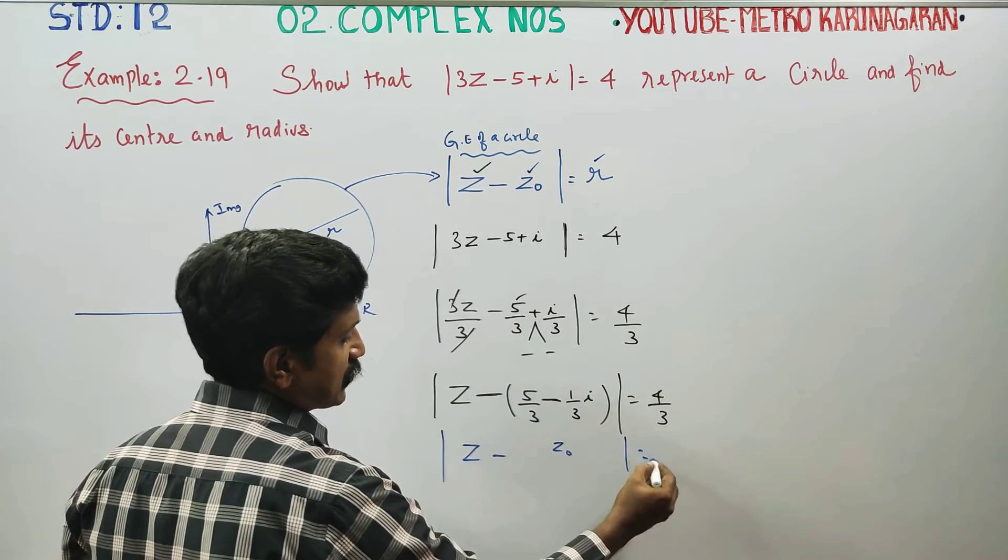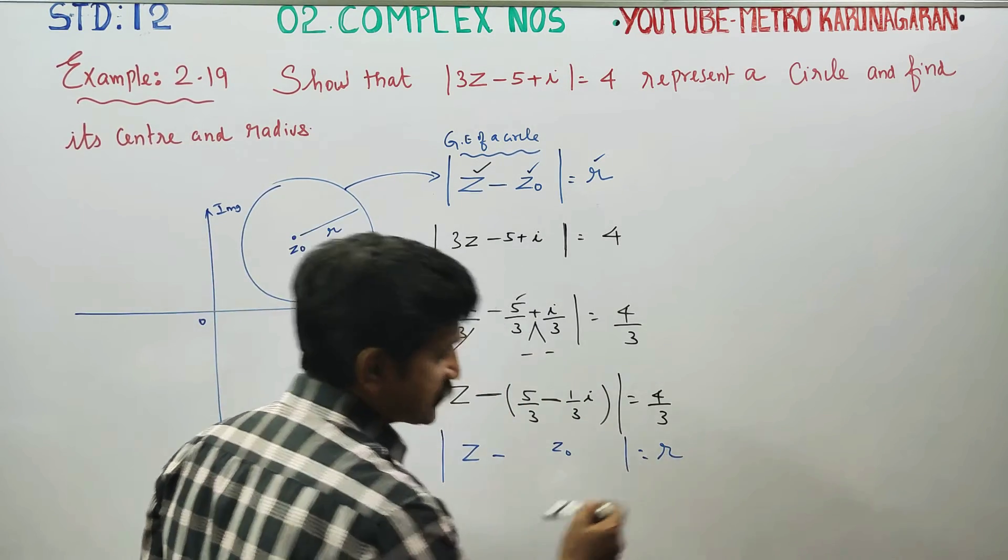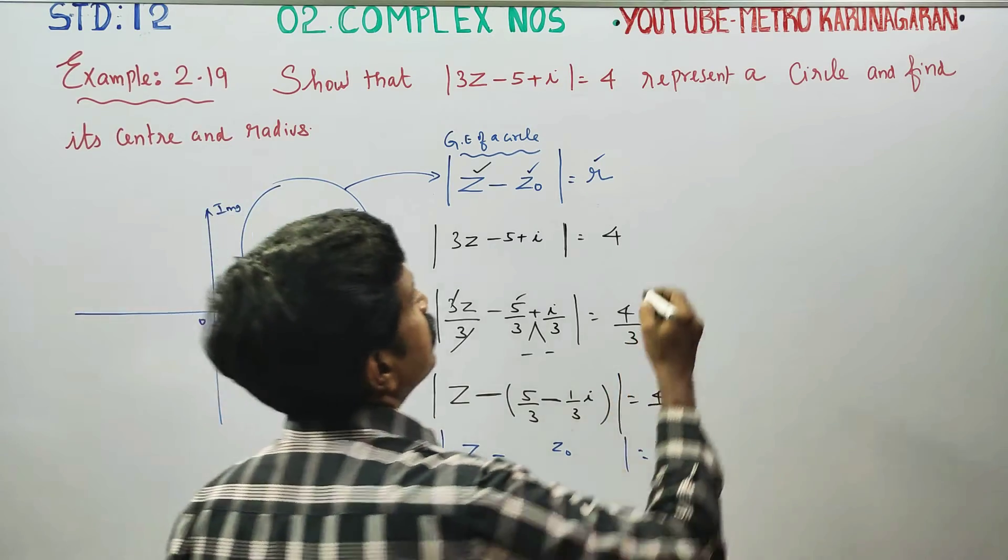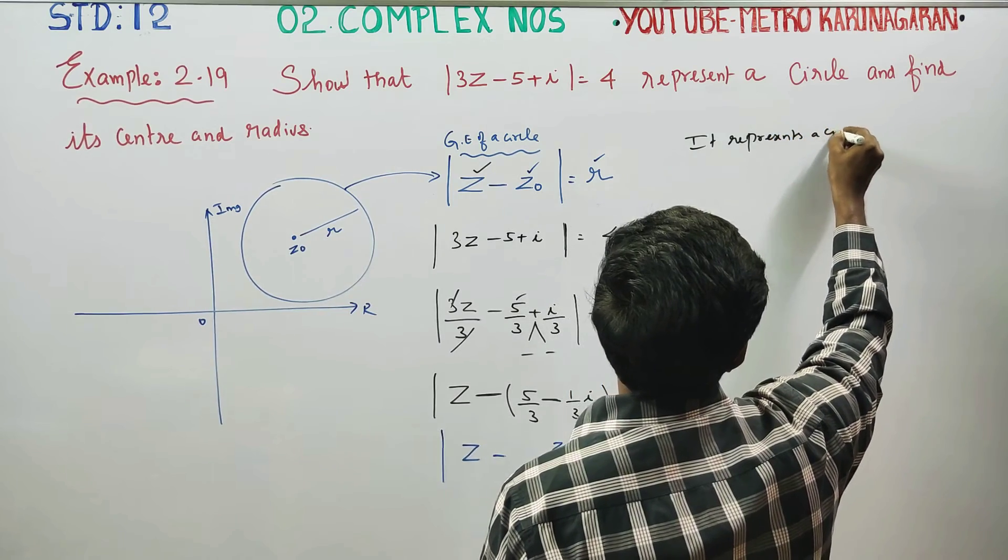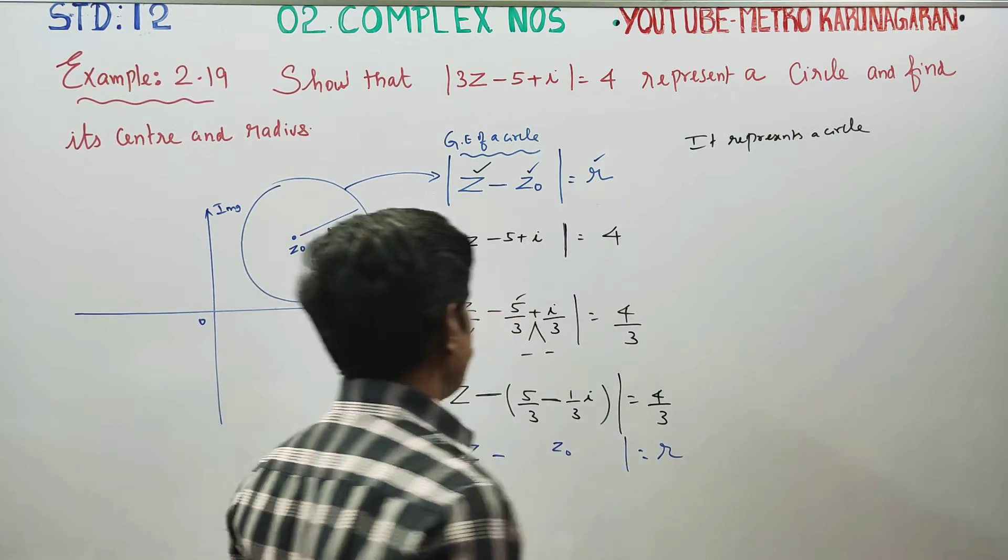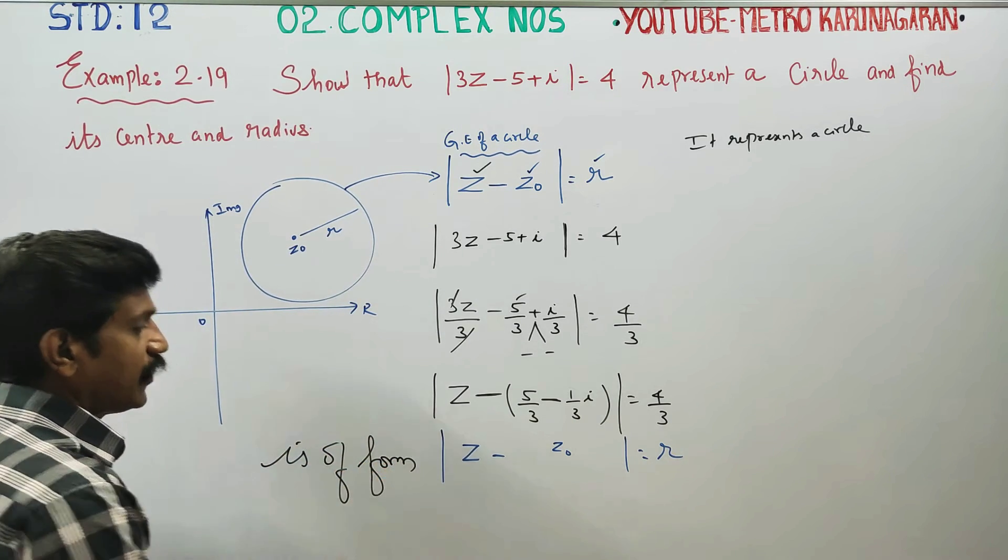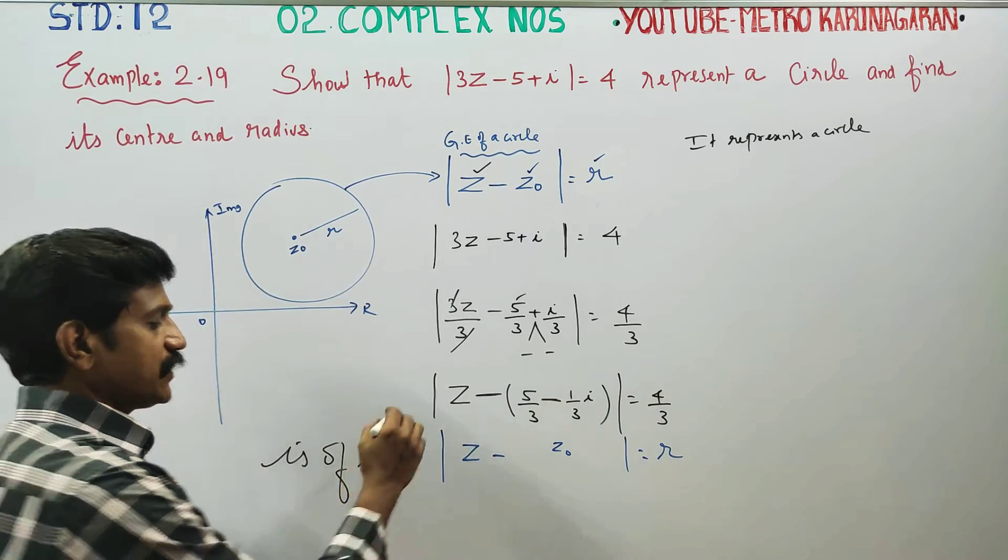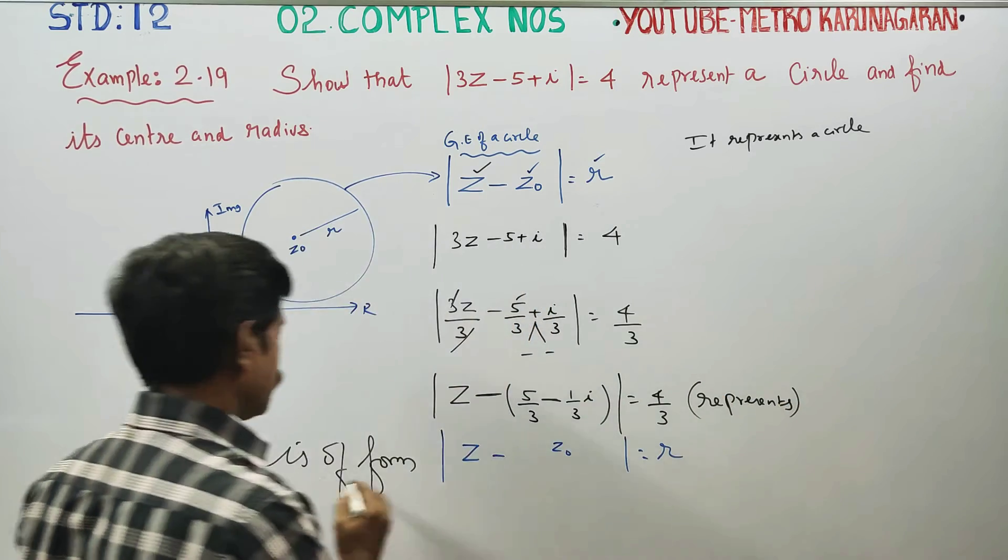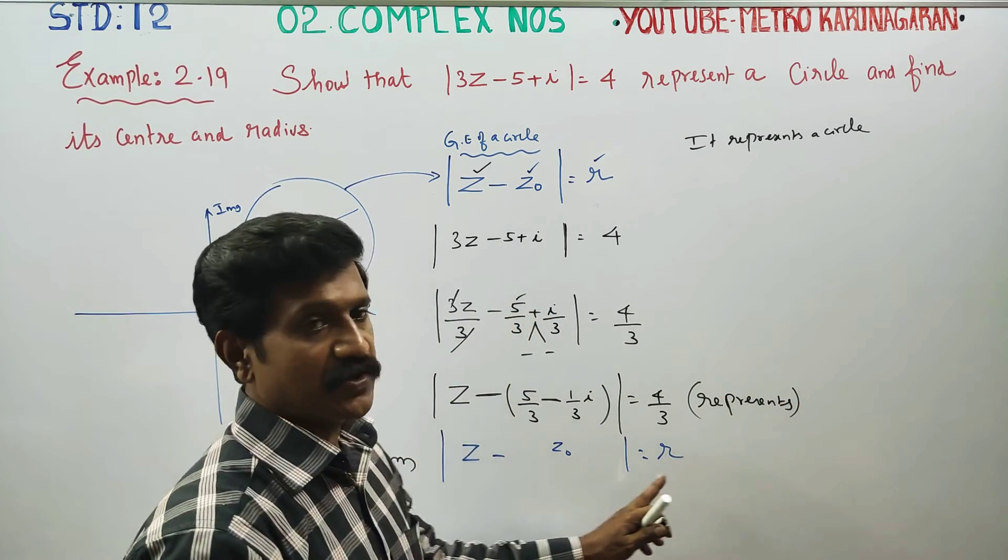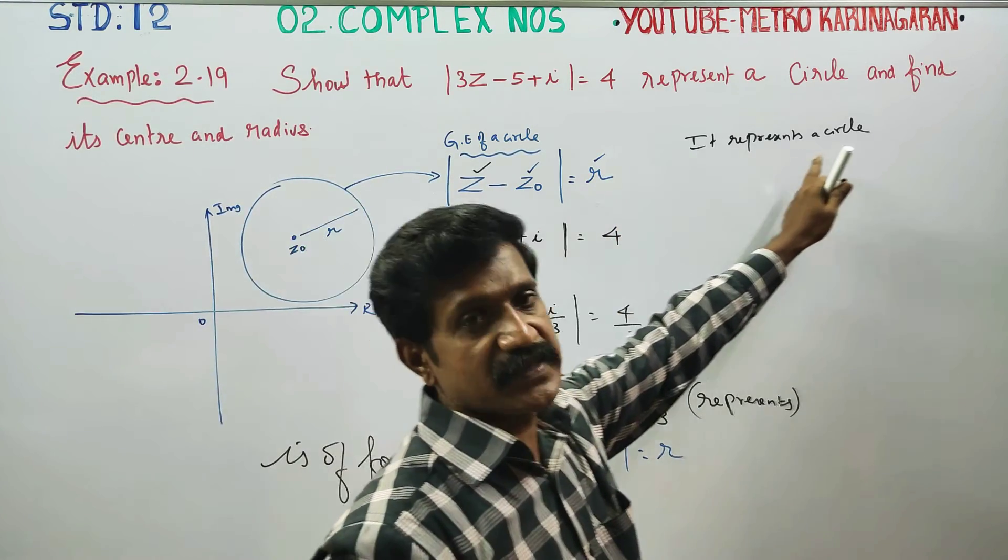|Z - Z0| is equal to R. In this style, it represents a circle. In the equation, it is of form |Z minus Z0| is equal to R. In this style, it represents a circle.